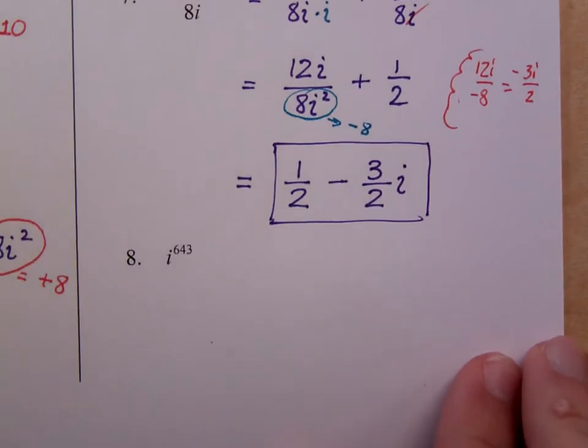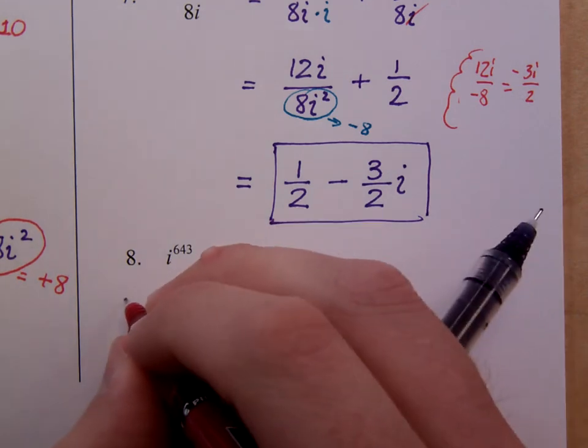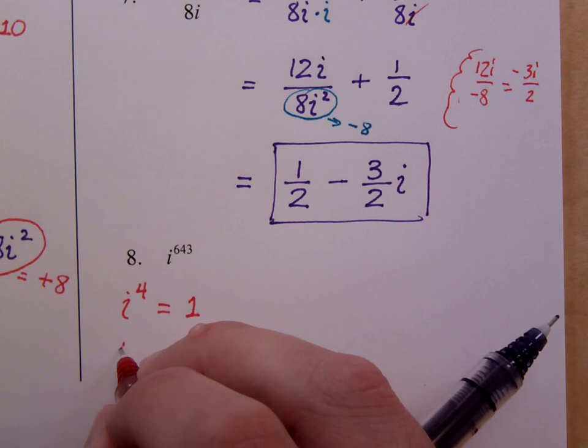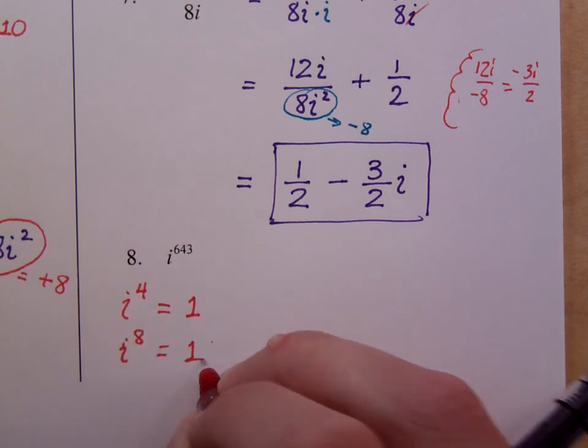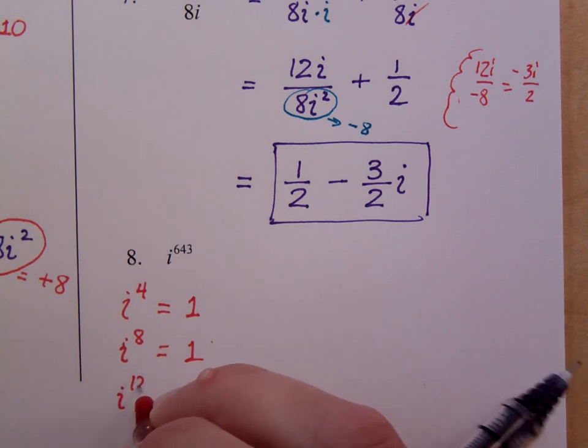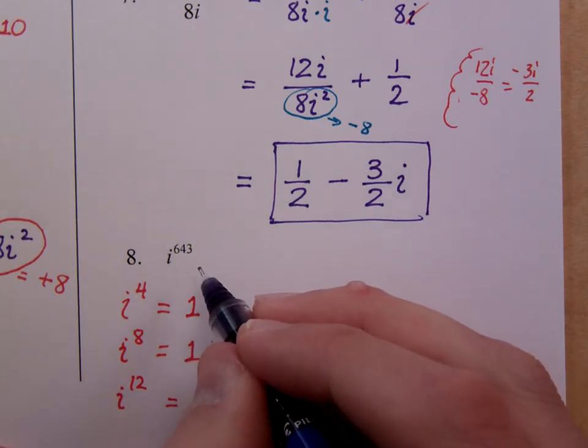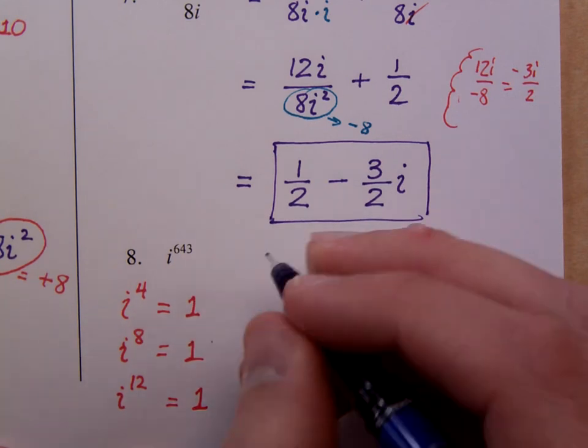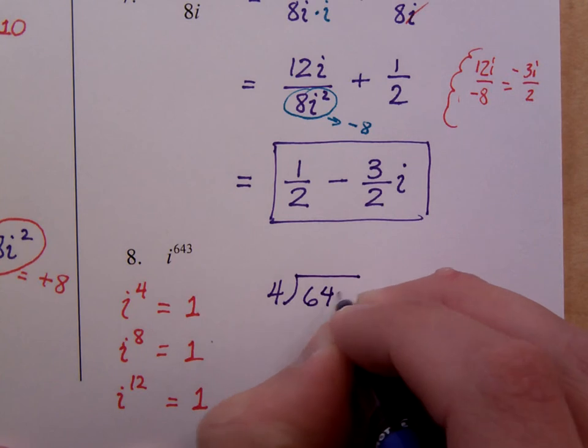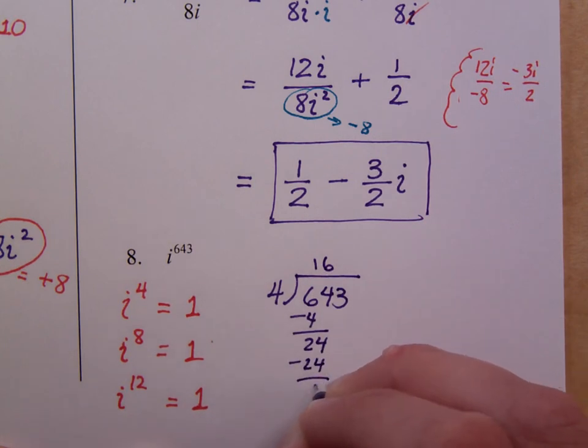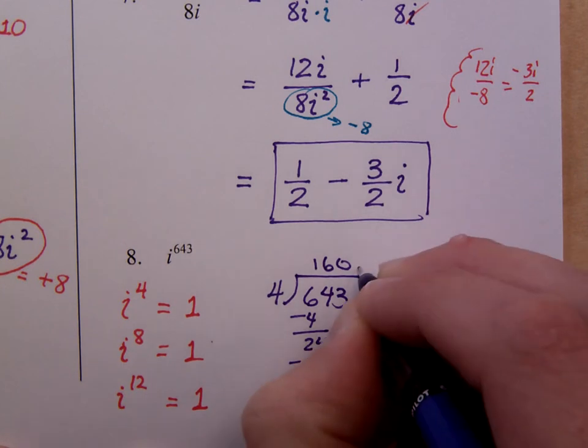And finally, the last problem that we have here is to simplify i to the 643rd power. Now, one of the things that we do know is this. That if you have 4 factors of i, that's just equal to a factor of 1. That means even if you have i to the 8th, it's still going to be 1. Or i to the 12th. Every 4 factors of i is a factor of 1. If you keep multiplying 1 times itself over and over, you still just get 1. So the trick for a problem like this is to figure out, well, how many factors of 4 do I have? Well, if I divide 4 into 643, just by doing a little bit of nice math here, I end up with a remainder of 3.